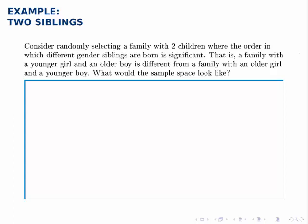Consider randomly selecting a family with two children where the order in which different gender siblings are born is significant. That is, a family with a younger girl and an older boy is different from a family with an older girl and a younger boy.